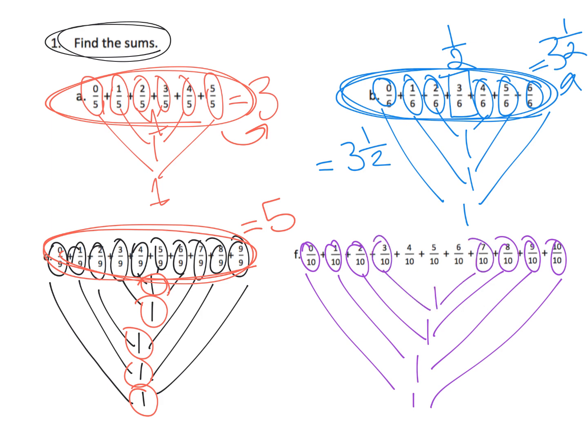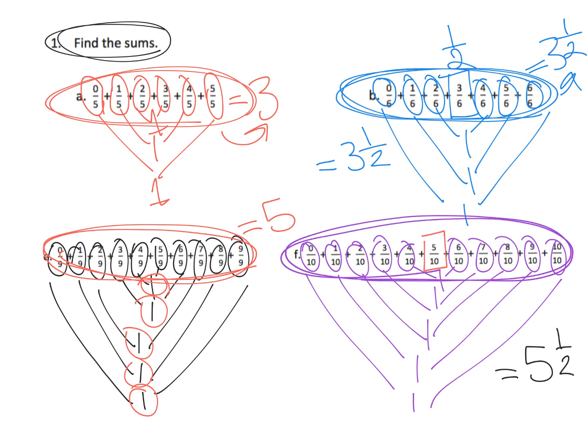Four-ninths plus six-ninths, that's one. Plus, we have one-half left over. So, we ended up getting the answer of five and one-half. So, when there were eleven fractions being added together, we ended up getting the answer of five and a half.